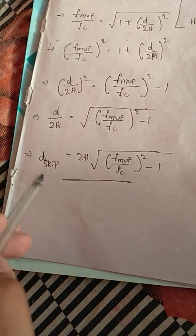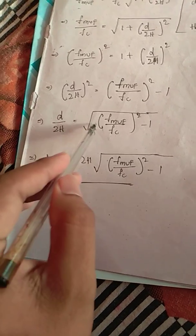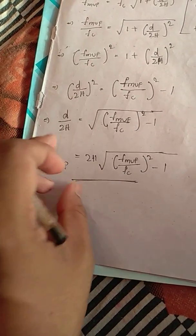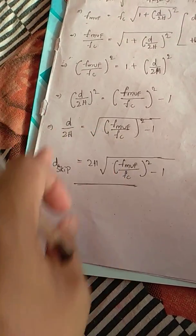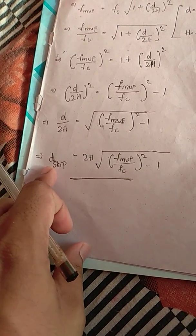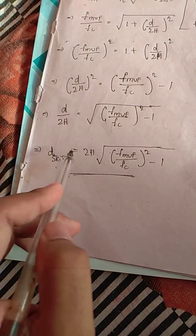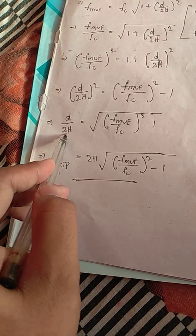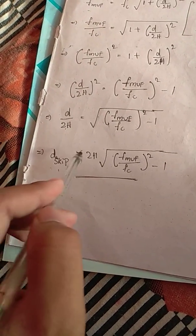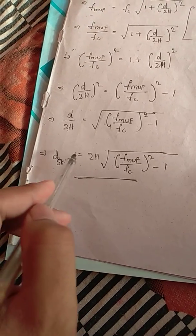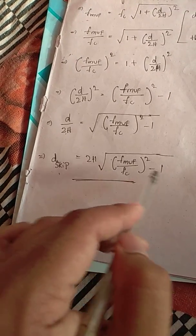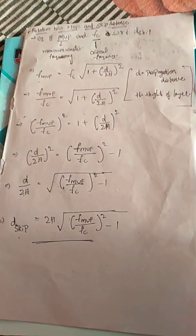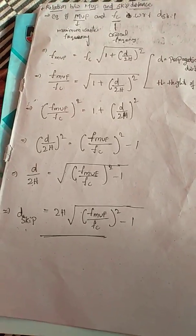Removing the square and applying a square root: D/2H equals the square root of ((MUF/fc) squared minus 1). Taking 2H to the other side, we get only D remaining. This distance is the skip distance, and the formula becomes: D_skip equals 2H times the square root of ((MUF/fc) squared minus 1).